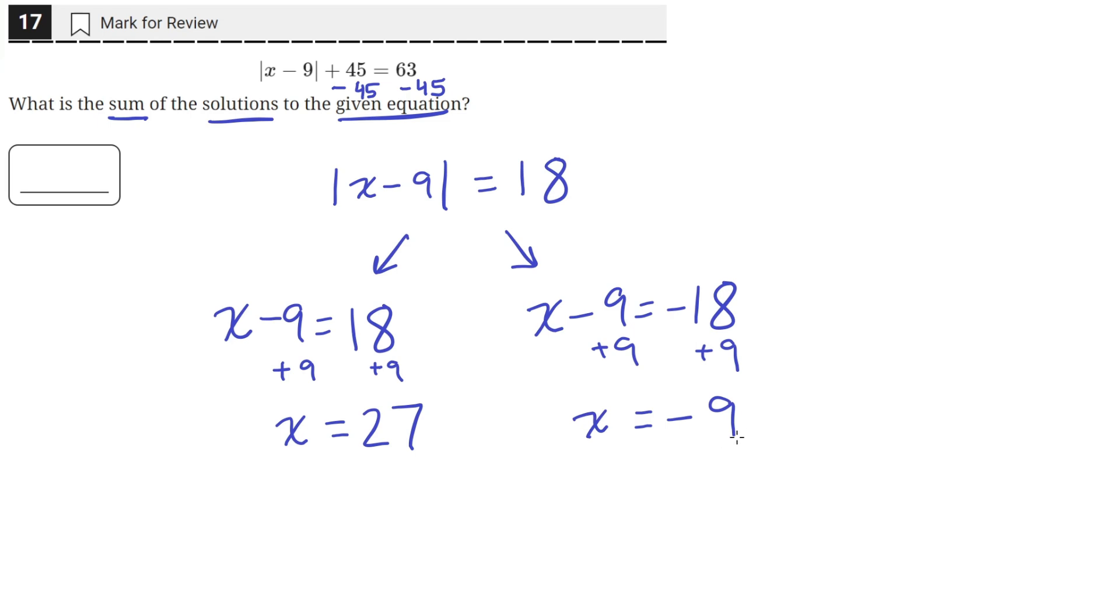And if you plug in the x value of negative 9, we'll have negative 9 minus 9, which is just equal to negative 18. And the absolute value of negative 18 is positive 18, which satisfies this equation again. So both of these are solutions to the equation.